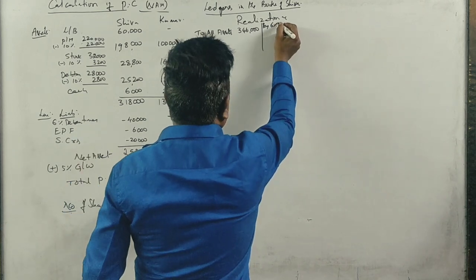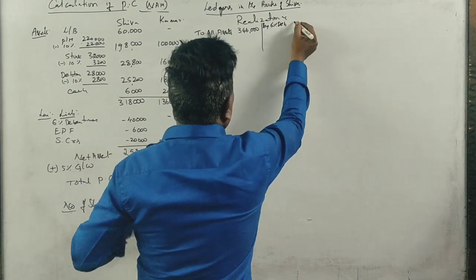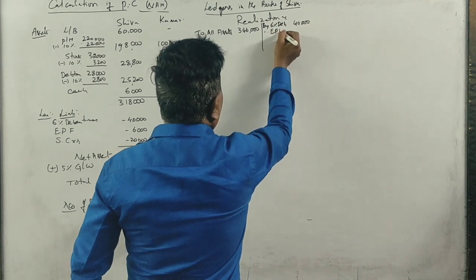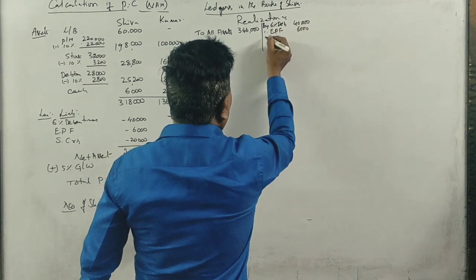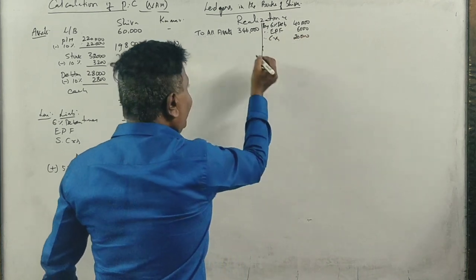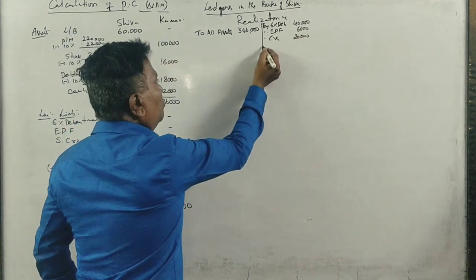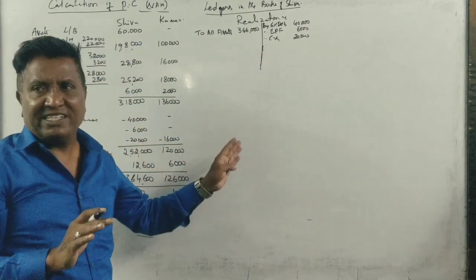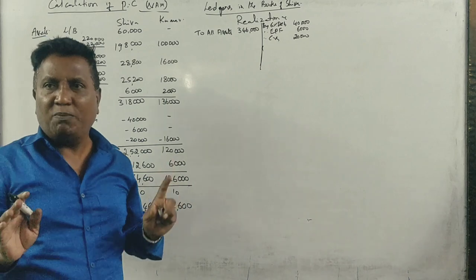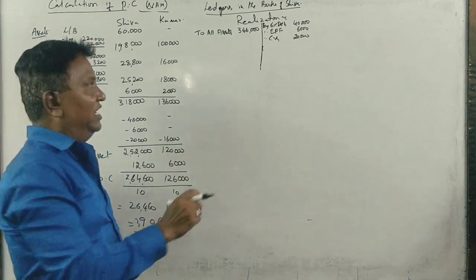And what are the liabilities? Debentures 40,000. EPFS 6,000. Creditors 20,000. In this case, you will have 3,46,000 assets and you will have 66,000 liabilities.